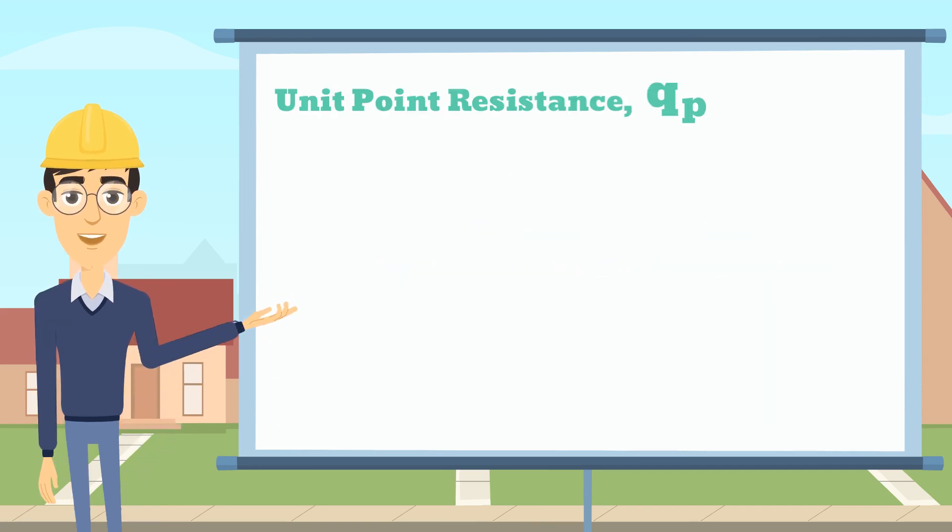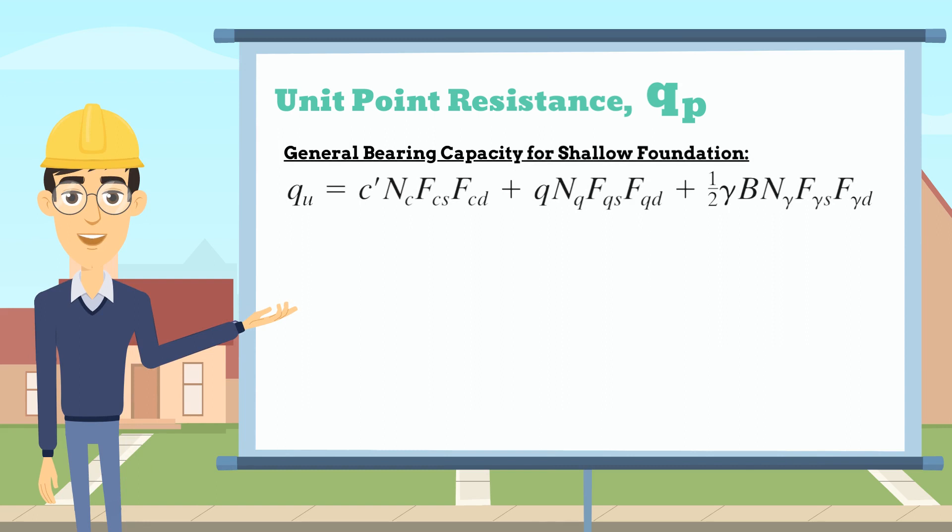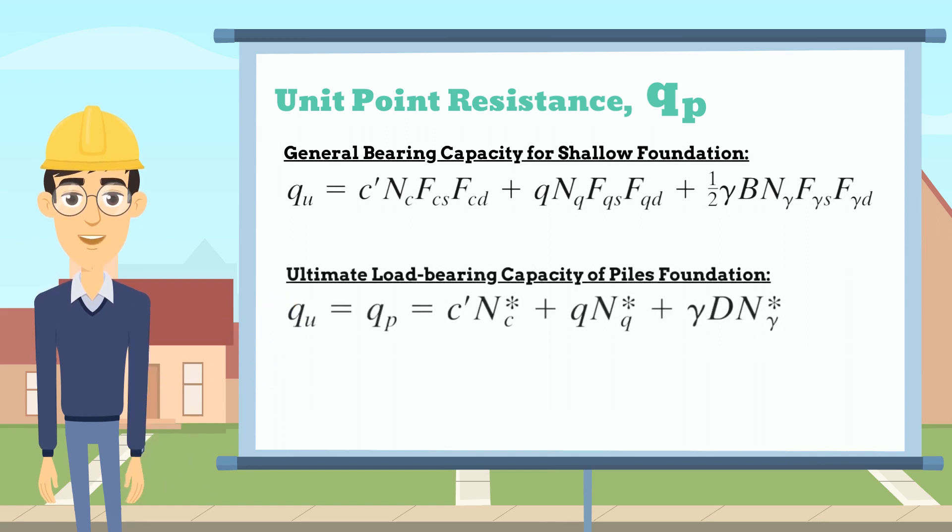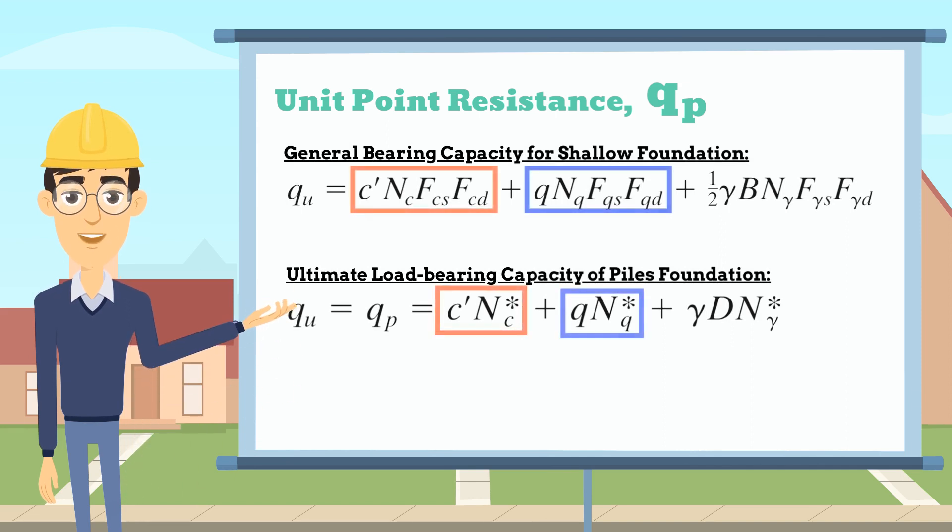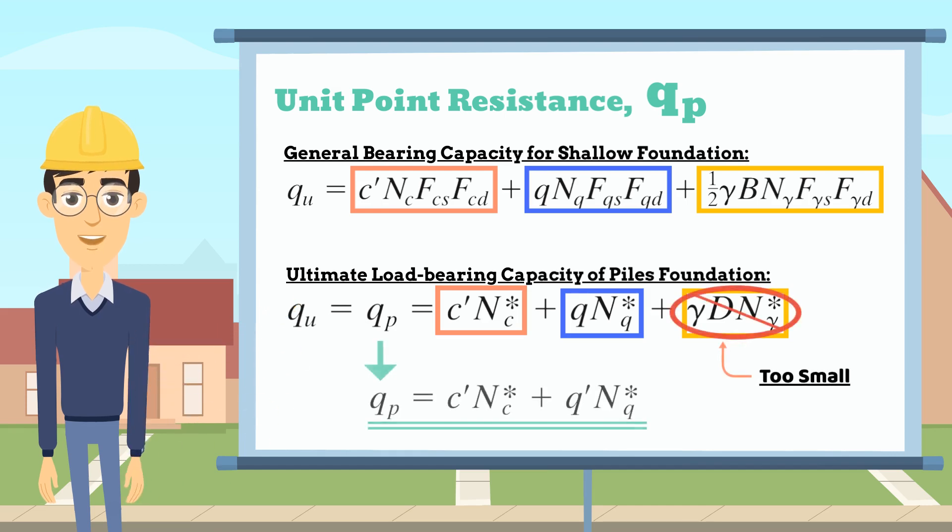For the unit point resistance of the pile point, similar to the Meyerhoff method for estimating the ultimate bearing capacity for shallow foundations, the pile foundation also has the part of cohesion, the effect of stress, and the unit weight of the soil. However, the width is too small for the typical pile, therefore the last part can be dropped. By doing so, we can get the final formula of the point bearing of piles.